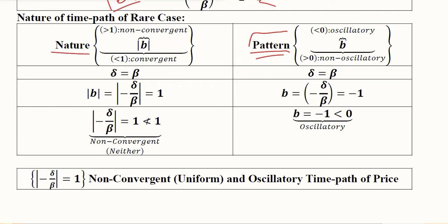The absolute value of b: if it is greater than 1 it would be non-convergent, less than 1 it would be convergent. Here, Delta and Beta are equal, their ratio would be equal to 1, and the minus sign would be omitted because of the absolute sign, so we will get |b| equal to 1.